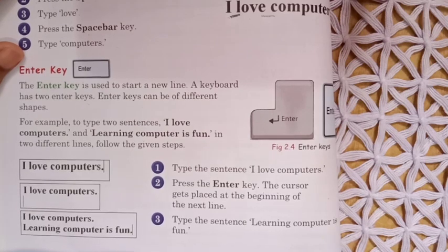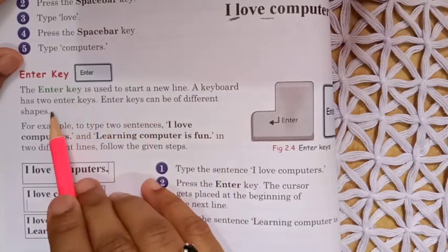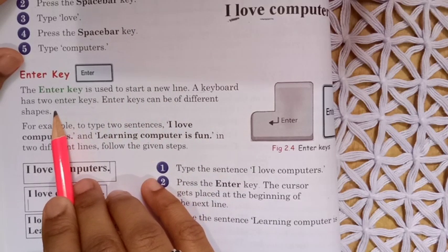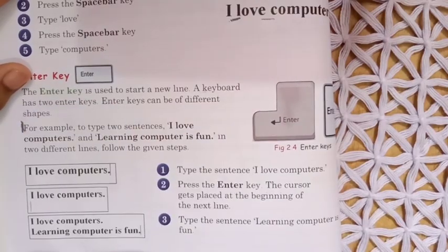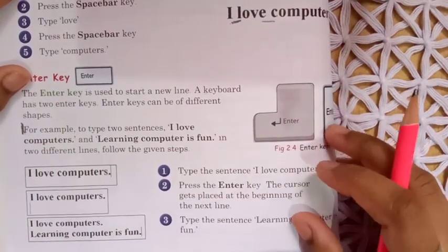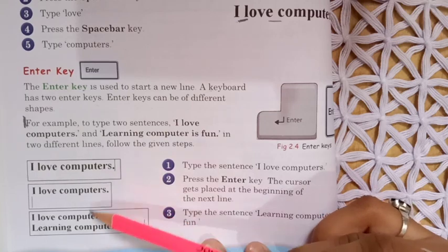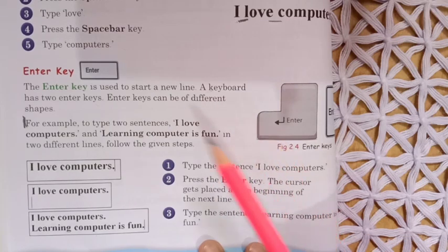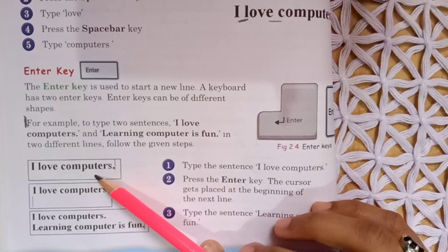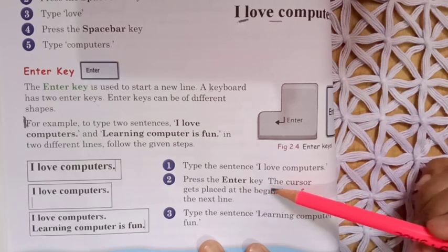The enter key is used for starting a new line. Suppose you have typed a paragraph and you do not want to continue on the same line — you want to change the paragraph. Press the enter key and the cursor automatically moves to the next line and starts from the beginning of that new line. For example: type 'I love computer', then press the enter key, and the cursor moves to the start of the next line.